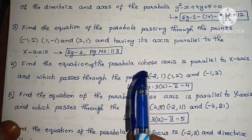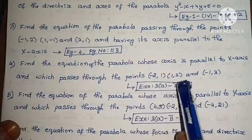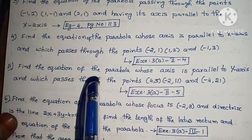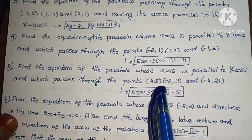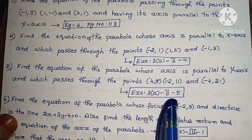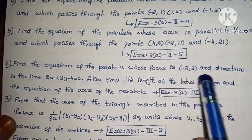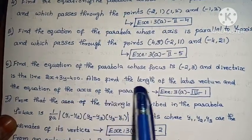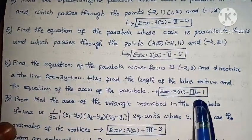Next, find the equation of the parabola whose axis is parallel to the x-axis and which passes through the points (-2, 1), (1, 2) and (-1, 3). Exercise 3, second roman, fourth problem. Next, find the equation of the parabola whose axis is parallel to the y-axis and which passes through the points (4, 5), (-2, 11) and (-4, 21). Exercise 3, second roman, fifth problem. Next, find the equation of the parabola whose focus is (-2, 3) and the directrix is the line 2x + 3y - 4 = 0. Also find the length of the latus rectum and the equation of the axis of the parabola. Exercise 3, third roman, first problem.